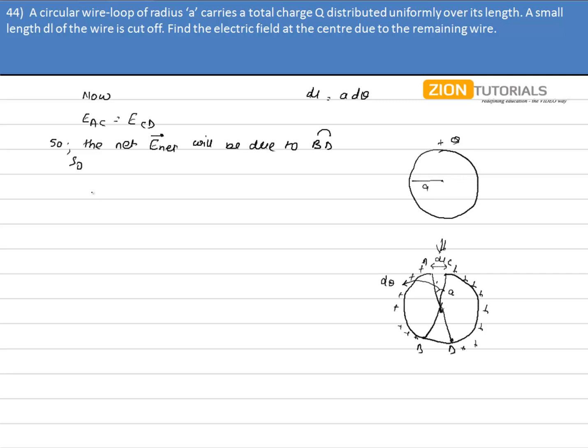So, first of all, we will calculate the charge that will be contained on the arc BD. Now, we have Q charge contained over the length 2πA initially. Now, we have the arc length DL, so the charge over this DL arc length will be Q into DL divided by 2πA. Let us assume this to be DQ charge.